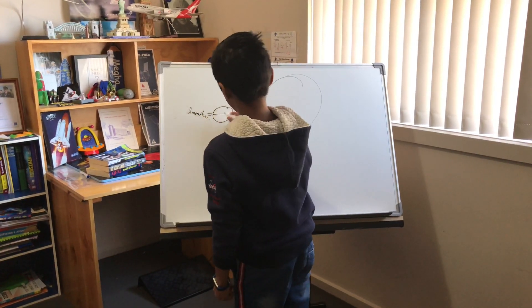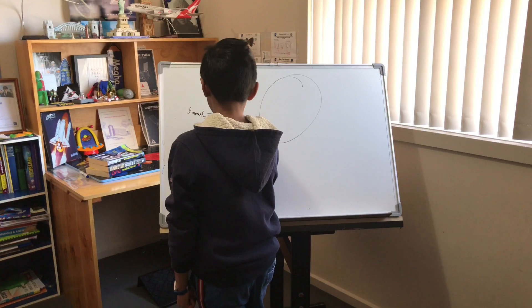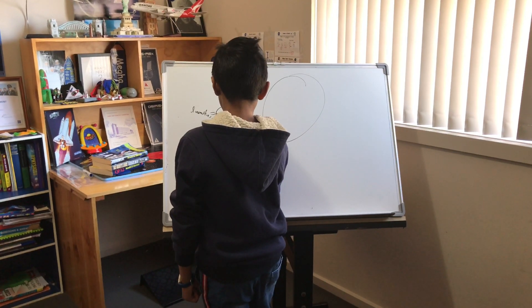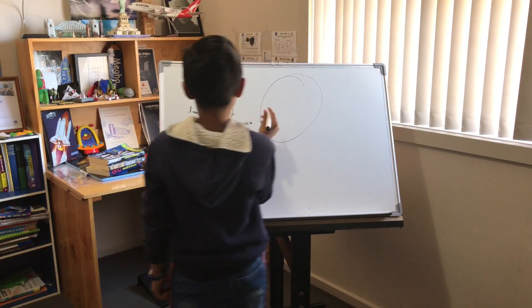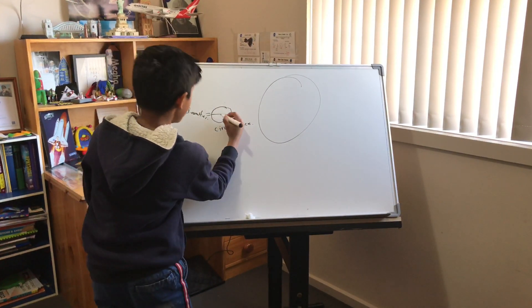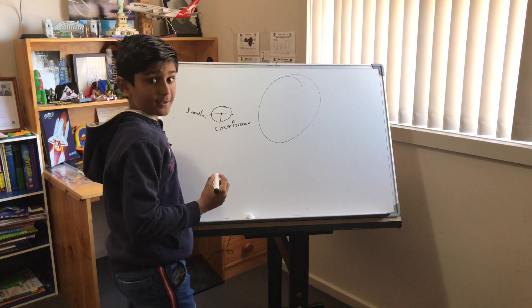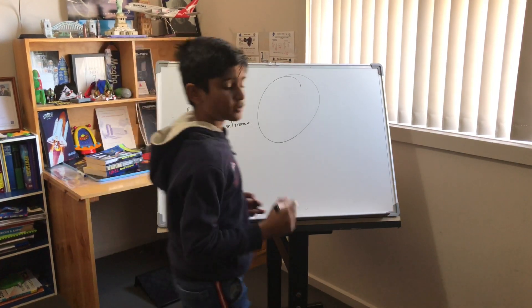And then this is the circumference. This is called the radius - the distance between there is called the radius.